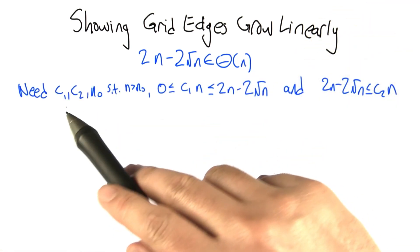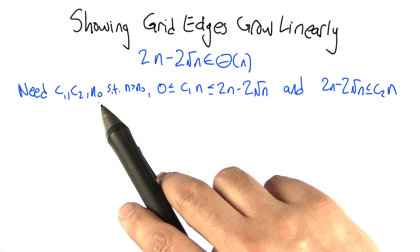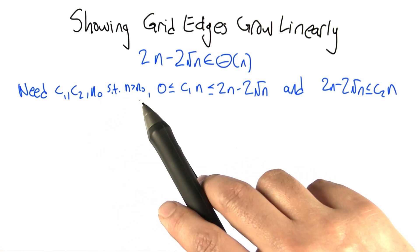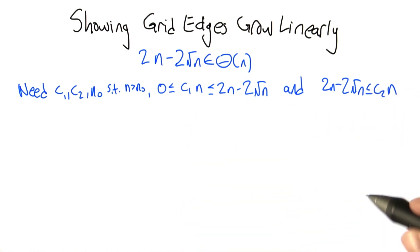So the game plan is that we need to find constants c1 and c2 bigger than 0 and a threshold n0, so that for all the n bigger than n0, the function that we care about is sandwiched between these two scalings. So let's focus on this one first.